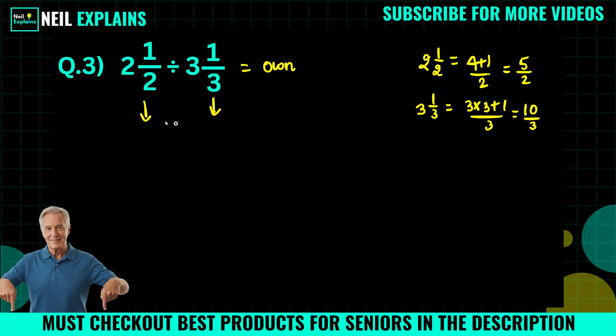So we will write simply five by two divided by ten by three. Now here we can say both are in the fraction values and there is division, so we will use here the KCF.